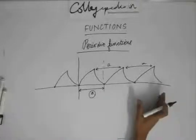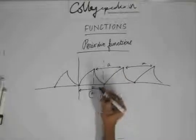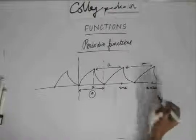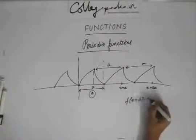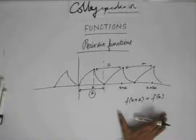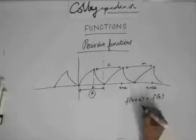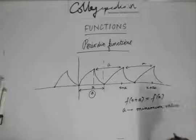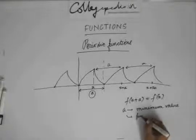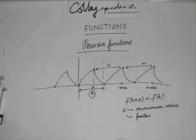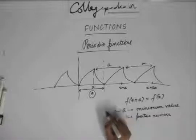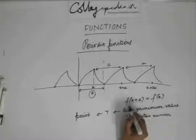Graphically, we have seen what a periodic function is. Now, mathematically, if we want to represent it: if this point is x, then this point is x plus A, and this point is x plus 2A. So mathematically, f(x + A) = f(x). This is how a periodic function is defined, and this is the property a periodic function should follow. A should have the minimum positive value. And this A, we also write as T, and T is called the period of the function.